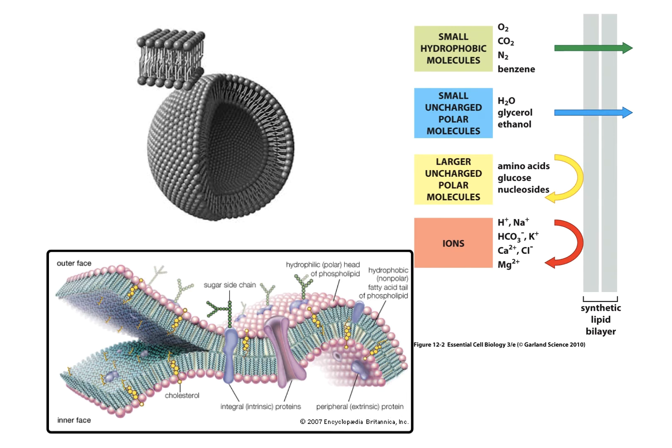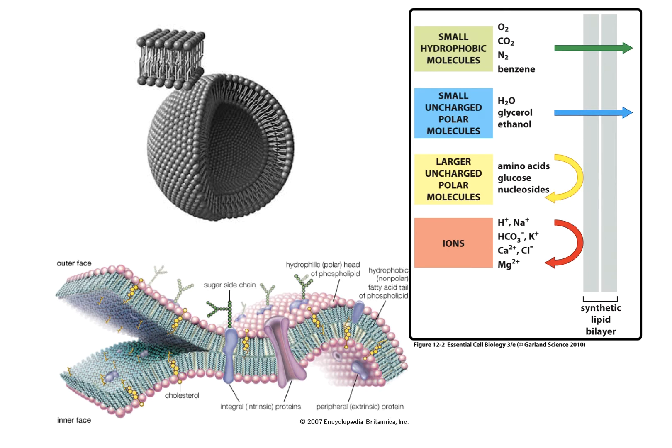Embedded in those are proteins, including proteins that span both layers of the membrane, some that span only one layer, and some that form special pores or transporters through the membrane. This allows discrimination as to what's inside the cell on one side and what's outside on the other. Very small molecules such as oxygen, CO2, water, benzene, and nitrogen can go across the membrane fairly readily.